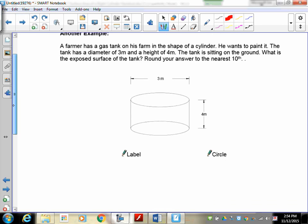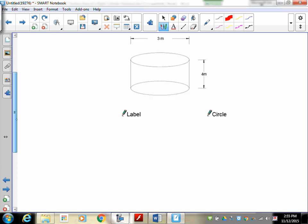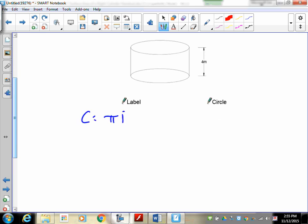Here's another one. A farmer has a huge gas tank in the shape of a cylinder on his farm, and he wants to paint it. The tank has a diameter of 3 meters, a height of 4 meters. The tank is sitting on the ground. What is the exposed surface of the tank? Round your answer to the nearest tenth of a meter. Okay. So, let's take a look at just like we did before. We need to find our label. So, I need you to do C is equal to pi D. And then, you're going to be using area as equal to length times width. And then, you're going to use area as equal to pi R squared. So, I want you to pause, sorry, pause the recording and complete this question.